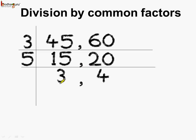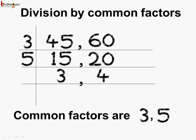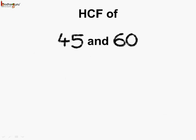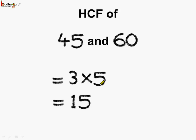Now can we find a common factor of the quotients 3 and 4? No. So here we stop. We got the common factors of 45 and 60 as 3 and 5. So what is the HCF of 45 and 60? It is equal to the product of common factors, which is 3 and 5. We can say HCF of 45 and 60 is equal to 15.